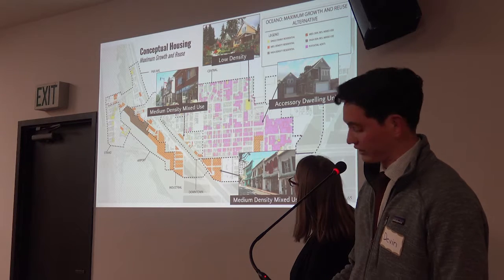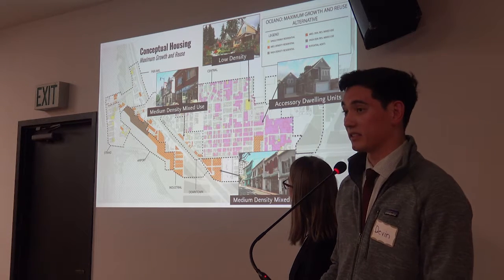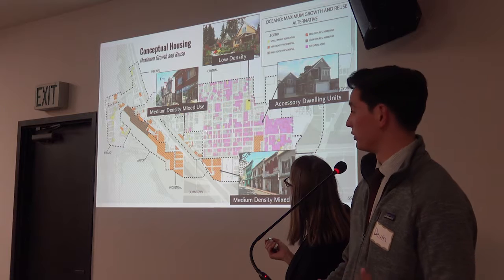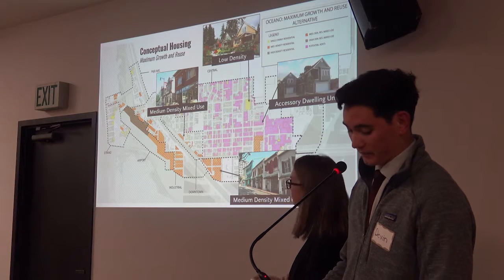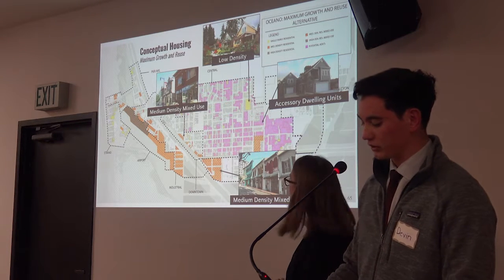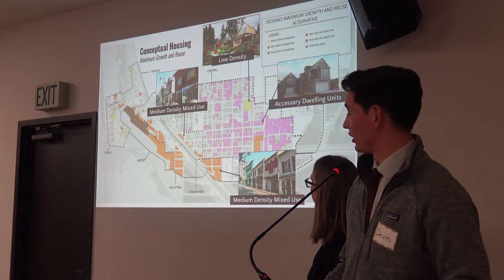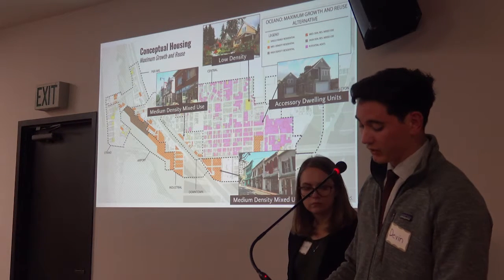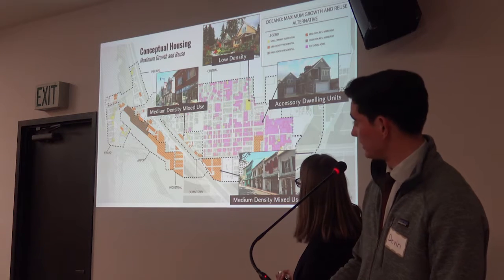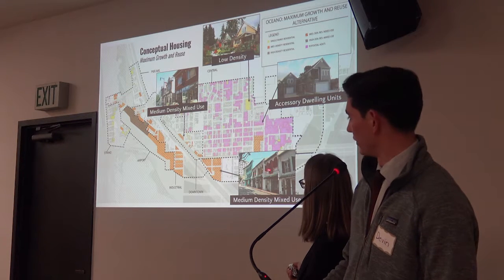On the east side of Oceano, this alternative maintains single-family homes and includes provisions for ADUs throughout Central Oceano. This can accommodate additional growth by increasing density without changing the neighborhood character. This alternative also considers medium-density mixed-use development in the downtown and southern Oceano neighborhoods.